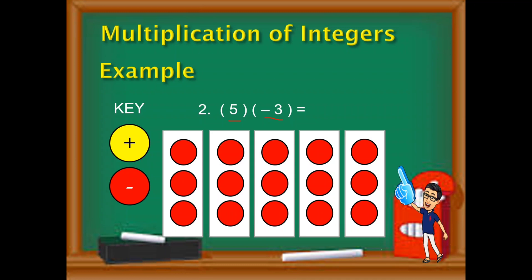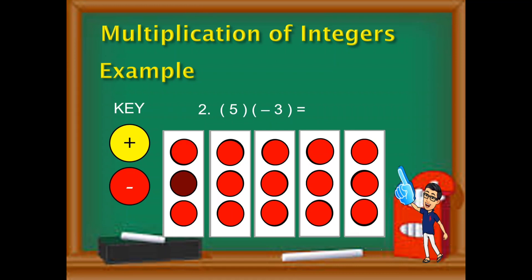Then after that, ika-count na ngayon natin ilan yung chips na mayroon tayo. So we have 1, 2, 3, 4, 5, 6, 7, 8, 9, 10, 11, 12, 13, 14, and 15. Therefore, 5 times negative 3 is equal to negative 15 kasi red chips.